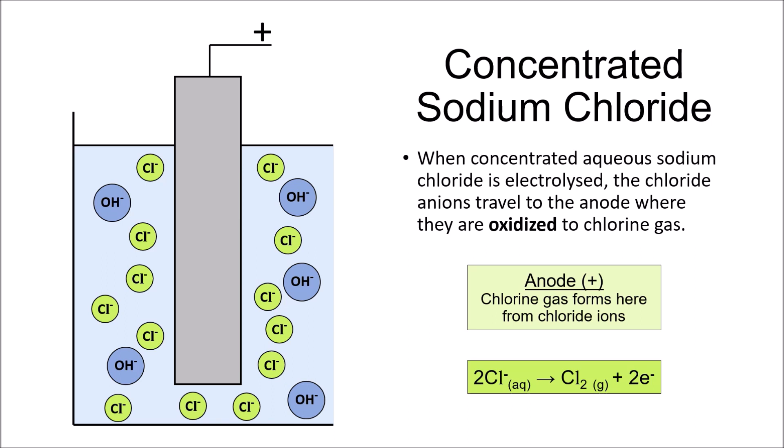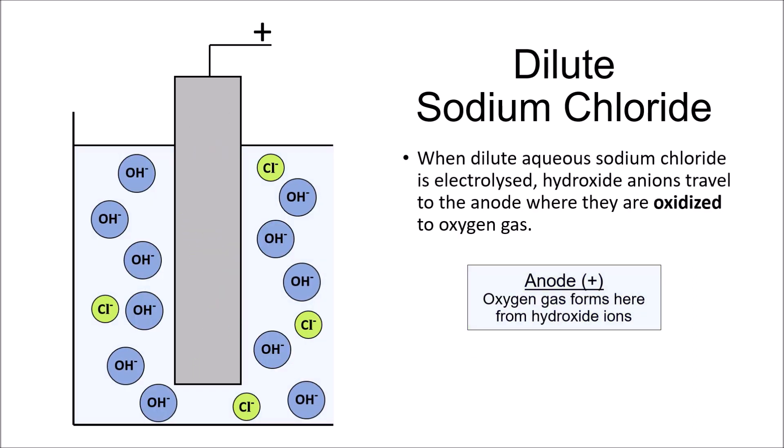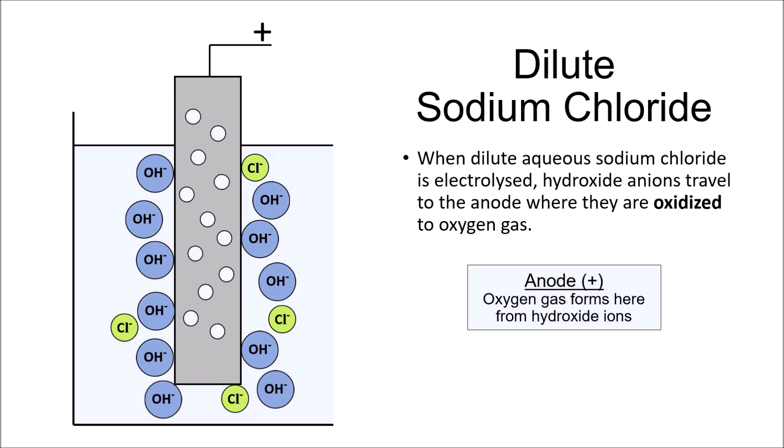This is basically first come, first serve at the anode. The greater the concentration of the chloride ions, the more likely chlorine gas will be formed. If we use a dilute solution instead, there won't be as many chloride ions available, and it will be the hydroxide ions that will be discharged in the form of oxygen gas at the anode. Do learn this equation, as they will ask for it from time to time.